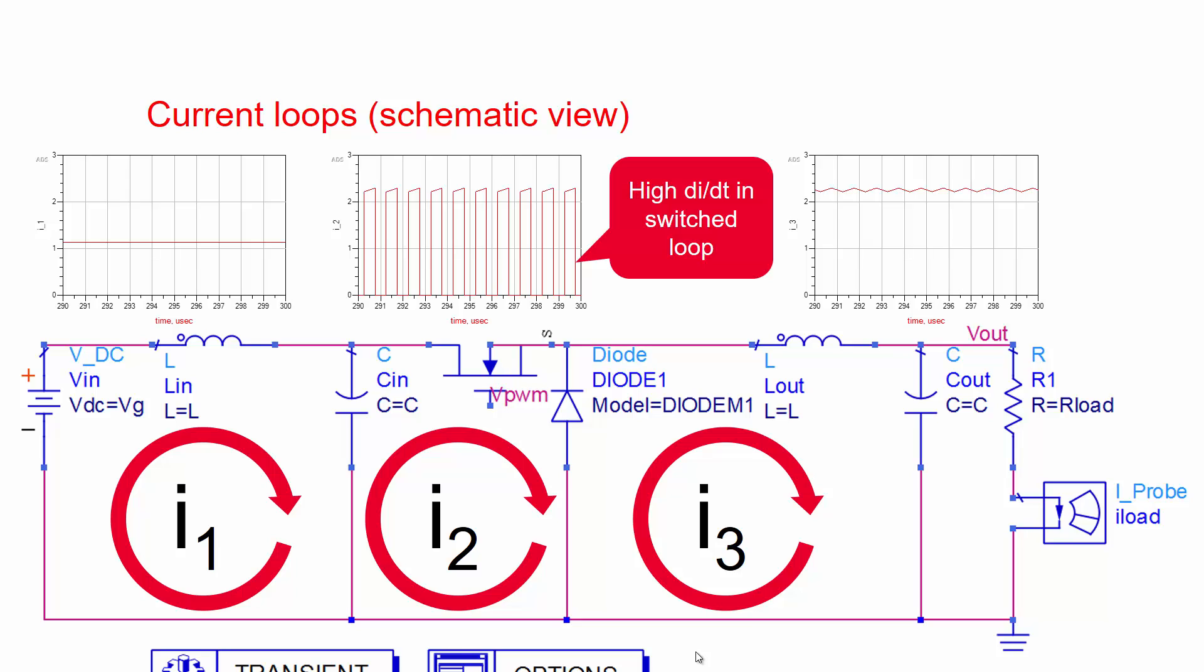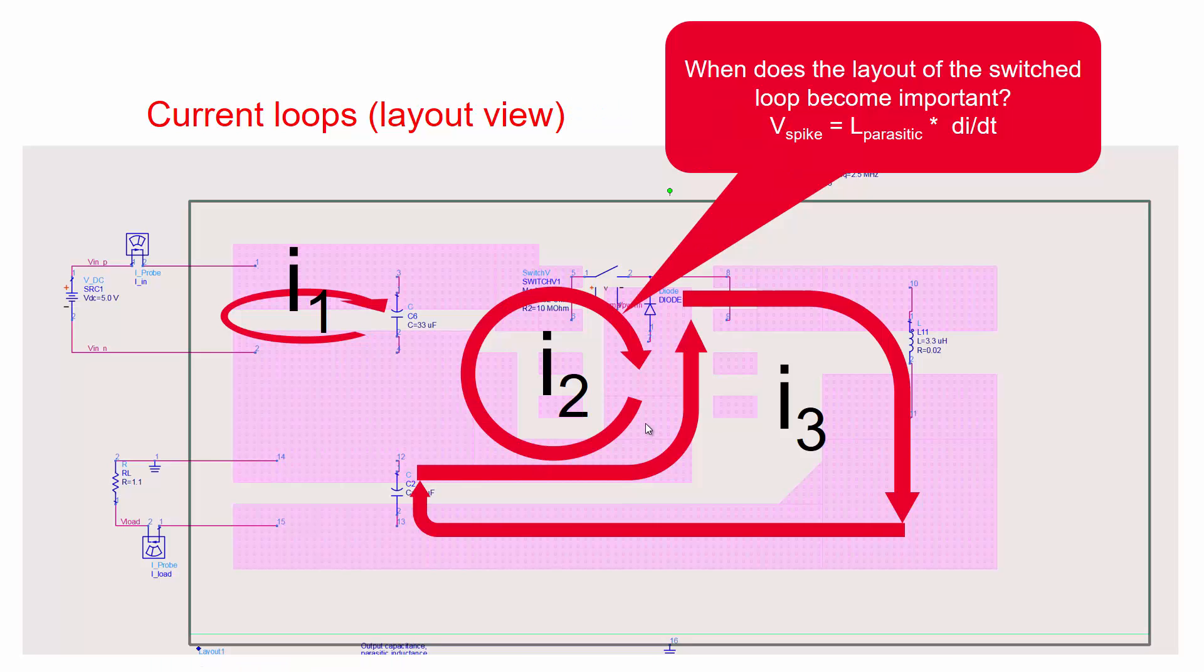But these high slew rates come with the dark side. In particular, the large spike voltage and noise generated across layout parasitics, particularly the inductance of PCB traces. This phenomenon is often called Conducted Electromagnetic Interference or Conducted EMI.